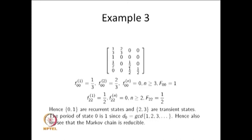Capital F(0,0) is the sum of all terms: 1/3 + 2/3 + 0 + 0 + ... = 1. Since F(0,0) = 1, we conclude that state 0 is a recurrent state.